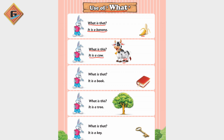'What is this?' — very nice — it is a cow. 'It is a cow.' The next is 'What is that?' Can you answer that? It is a book. 'It is a book.' Very simple. 'What is this?' — a tree — 'It is a tree.' The last one is 'What is that?' — a key — so 'It is a key.'